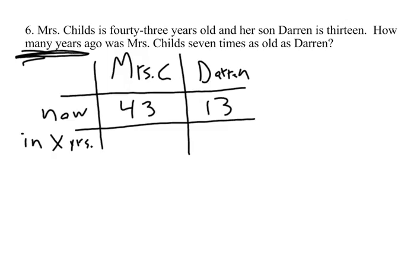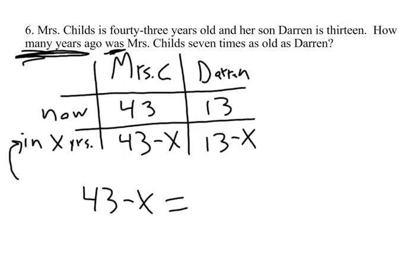Okay, this is years ago, so this is in the past. So X years ago, Mrs. Childs was X less than 43, or 43 minus X years old. Darren was 13 minus X years old. Now, "was" is just the past tense of "is," so that's equals — we're going to use this column. Mrs. Childs is 43 minus X in the past, and she was seven times as old as Darren, so that's Darren's age X years ago.